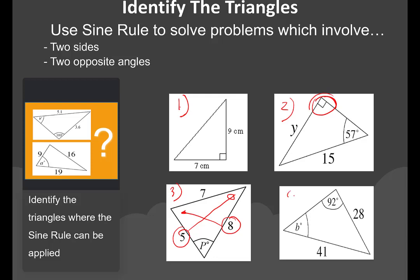In example four, we have angle 92 degrees and the opposite side is 41. We also have side 28 and an opposite angle B which we need to find. We have a side and opposite angle pair, and another side and opposite angle pair. Therefore we can use the sine rule on this triangle, and it is not a right-angle triangle.